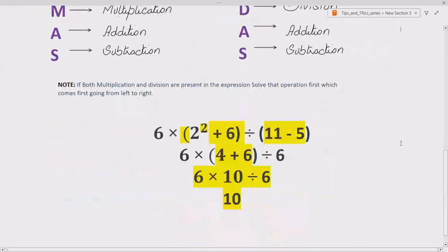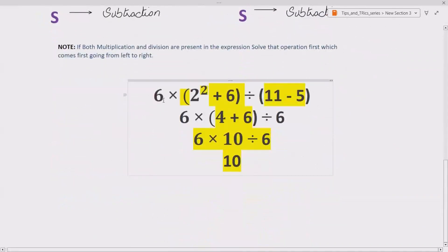Now let's see how we can solve this question. So we are given 6 multiplied with 2 square plus 6 divided by 11 minus 5. Now, according to BODMAS or PEMDAS, we have to solve the brackets first.